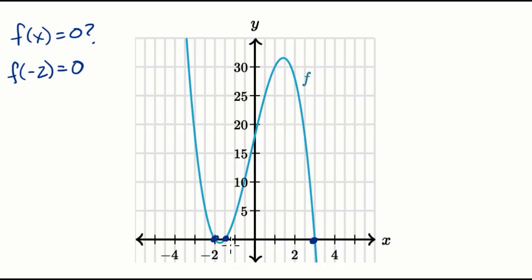We can see that this is, let's see, this is, if that's negative two, this is negative one. This is negative one and a half. So f of negative 1.5 is equal to zero. That's this point there.